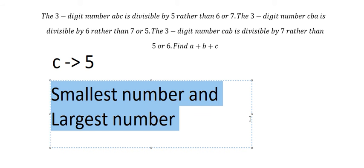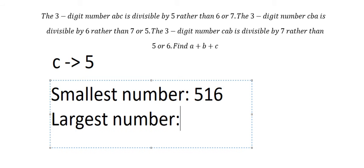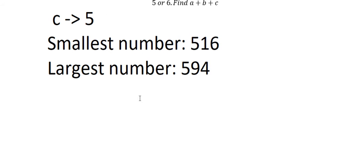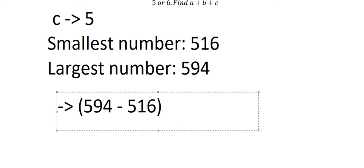We need to find the smallest number divisible by 6 in this range — that is 516. The largest number divisible by 6 is 594. So we need to find the total count of numbers from 516 to 594 that are divisible by 6.